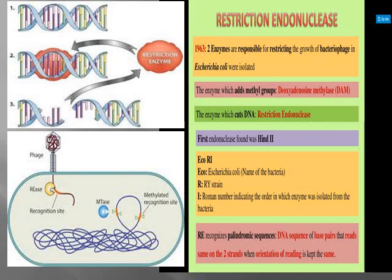Now, the tools of recombinant DNA technology include restriction enzymes, alkaline phosphatase, source of donor DNA, reverse transcriptase, polymerase enzyme, vectors, and host organisms.